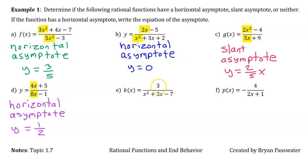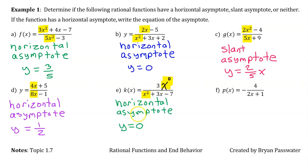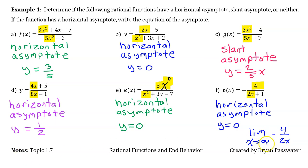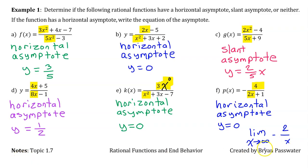For part e, don't forget that a constant is degree zero — this is like 3x to the zero power. So the degree of the denominator is definitely bigger, giving us a horizontal asymptote of y equals 0. The right end behavior is the limit as x approaches infinity of 3 over x squared; as x squared gets bigger and bigger, the value approaches 0. In part f, the degree of the denominator is again bigger because we have a degree-zero term on top, giving another horizontal asymptote of y equals 0, since the limit of negative 4 over 2x simplifies to negative 2 over x, which approaches 0.